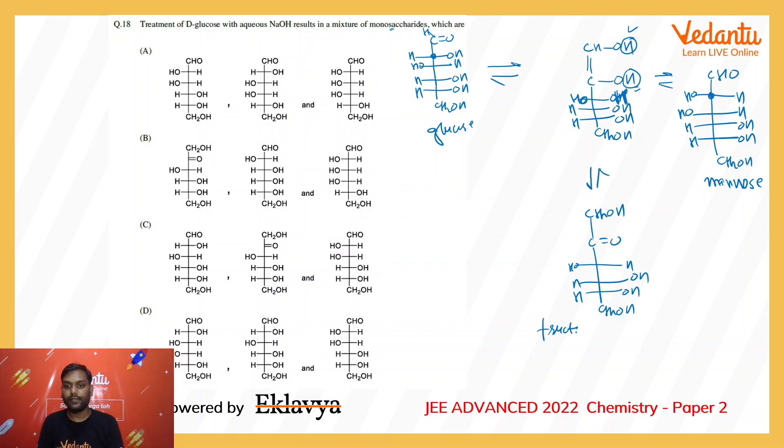So in the end, in the mixture you will have glucose, fructose, and mannose. The only option which has all these three monosaccharides is option C. The first compound written here is glucose, this is fructose, and this is mannose. So the correct answer is option C for this question. This completes the discussion of paper 2, thank you very much.